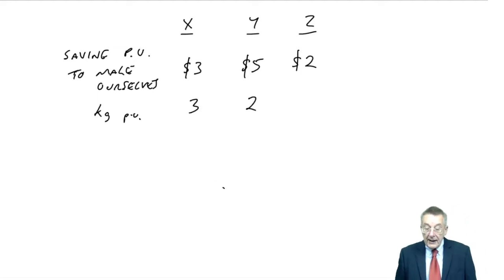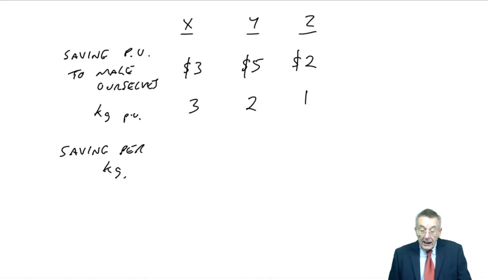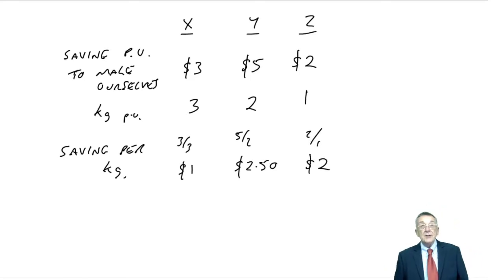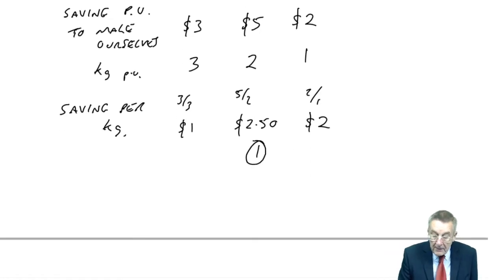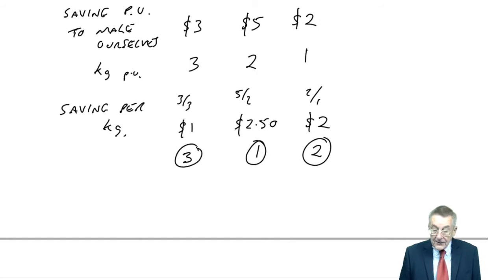So, how many kilos are needed per unit? X, to save $3, needs 3 kilos. Y, to save $5, needs 2 kilos. Z needs 1. And therefore, the saving per kilo of the limited material: X, 3 over 3, we save $1 per kilo if we use it to make X. If we use it to make Y, we'll save $2.50 a kilo. If we use it to make Z, every kilo used to make Z saves us $2. So, where would we be best using our material? Best would be to use it making Y. Every kilo I use saves me $2.50. Second best would be Z, and save $2. Third best would be X, and save $1.